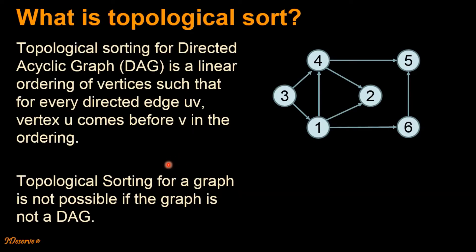So what is topological sort? Topological sorting for a directed acyclic graph is a linear ordering of vertices such that for every directed edge, vertex u should appear before vertex v in the ordering. For example, for this particular directed graph, vertex 3 will appear before vertex 4 because there is an edge from 3 to 4. Similarly, vertex 3 will also appear before vertex 1, and vertex 1 should appear before vertex 4, 2 and 6. Note that topological sorting for a graph is not possible if the graph is not a directed acyclic graph.